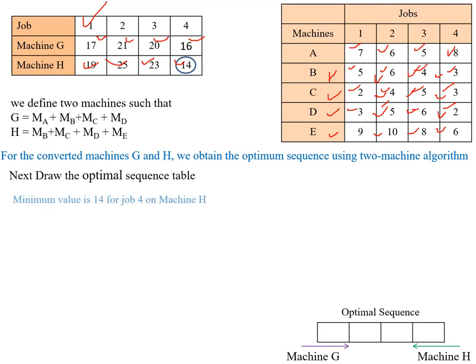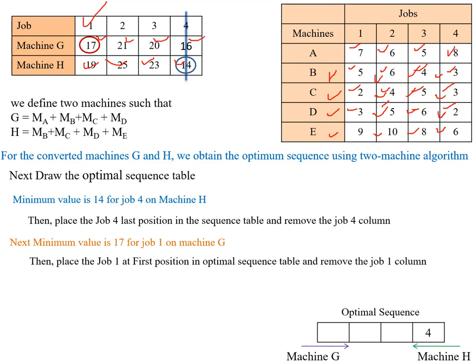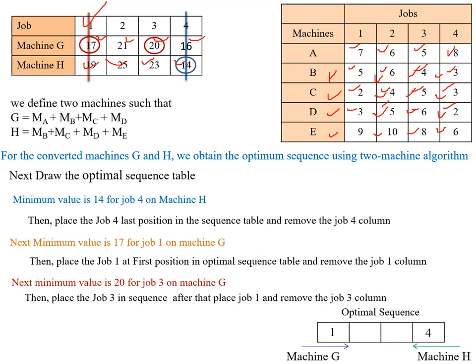The minimum processing time is 14 for job 4 on machine H. So we place job 4 in the last position and remove the job 4 column. The next minimum value is 17 for job 1 on machine G, so we place job 1 in the first position and remove the job 1 column. The next minimum value is 20 for job 3 on machine G, so we place job 3 after job 1 and remove the job 3 column.